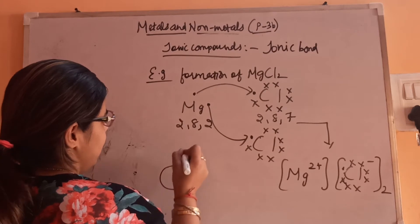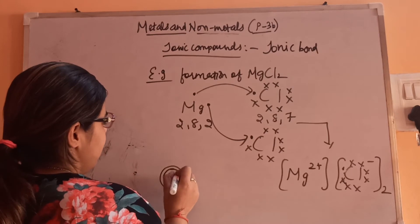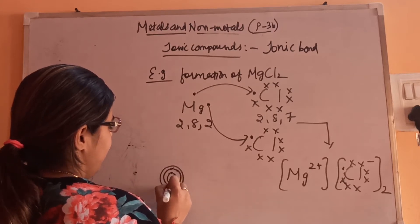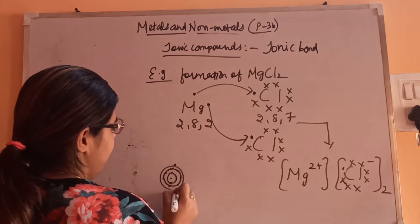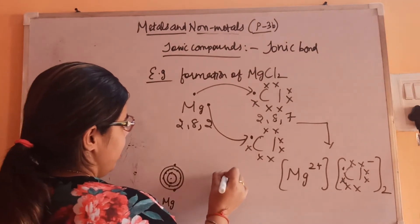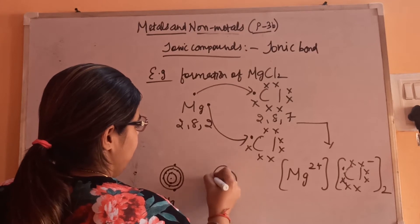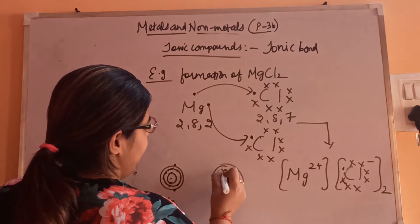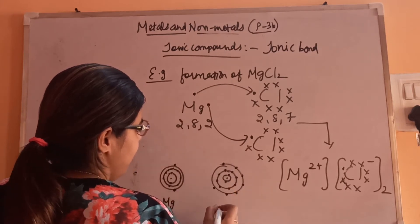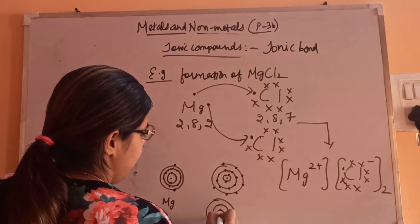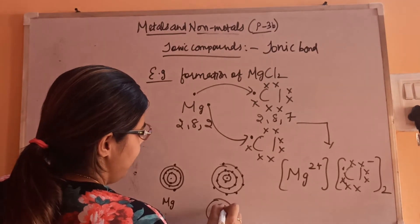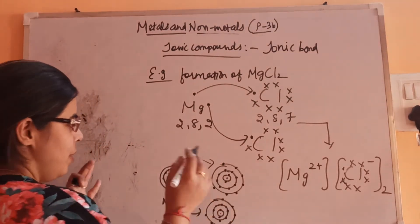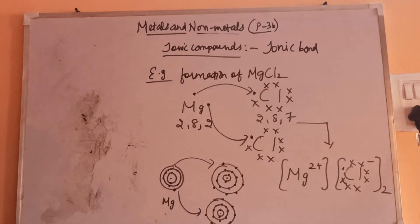We can also do this in shell/orbital diagram form. Magnesium has three shells — 2 electrons in the first, 8 in the second, and 2 in the outermost shell. Chlorine has three shells with 7 electrons in the outer shell. A second chlorine atom is drawn similarly, also with 7 outer electrons. One electron from magnesium goes to the first chlorine, and one goes to the second, forming the ionic bond. This is the ionic bond shown as an orbital picture.